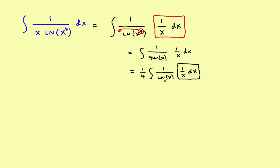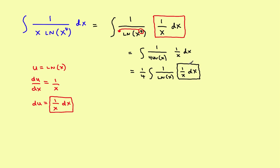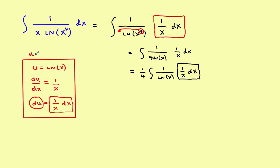Let u equal the natural log of x. The derivative of u with respect to x equals 1 over x, which means du equals 1 over x dx. This matches the remaining part of the integrand, so I can substitute du right there. That's the u substitution — I'll isolate it with a box.